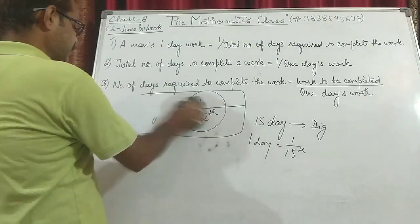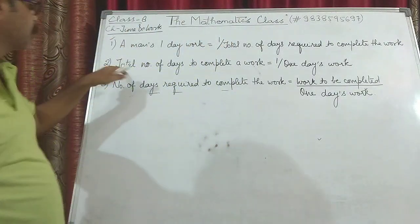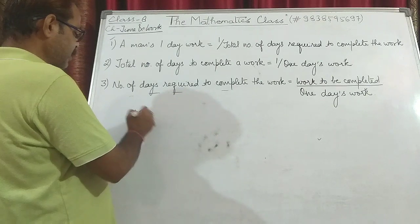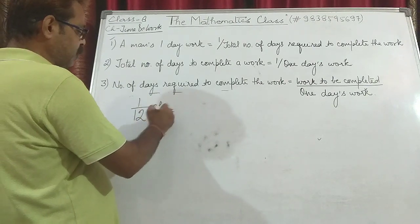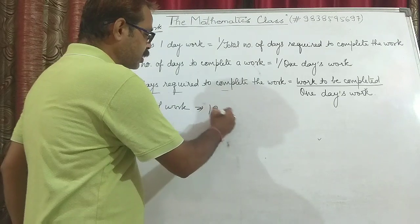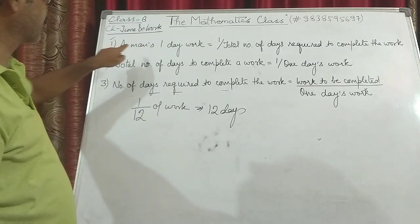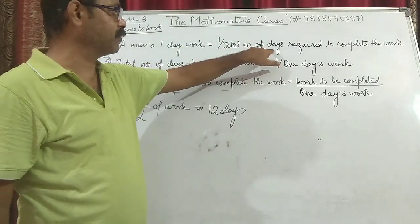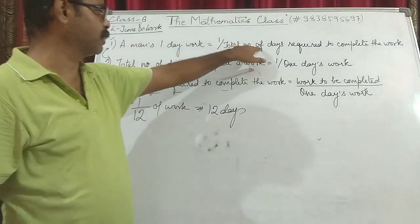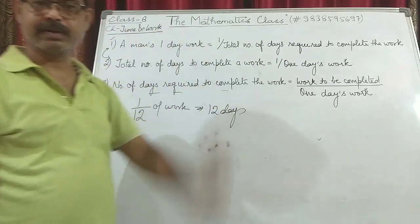Similarly, the second point: the total number of days required to complete the work is 1 upon the one-day's work. If a person completes 1/12th of work in one day, then in general it will take 12 days — that is the reciprocal. So these first and second points are reciprocals of each other. Total number of days required to complete the work equals 1 upon the man's one-day work.